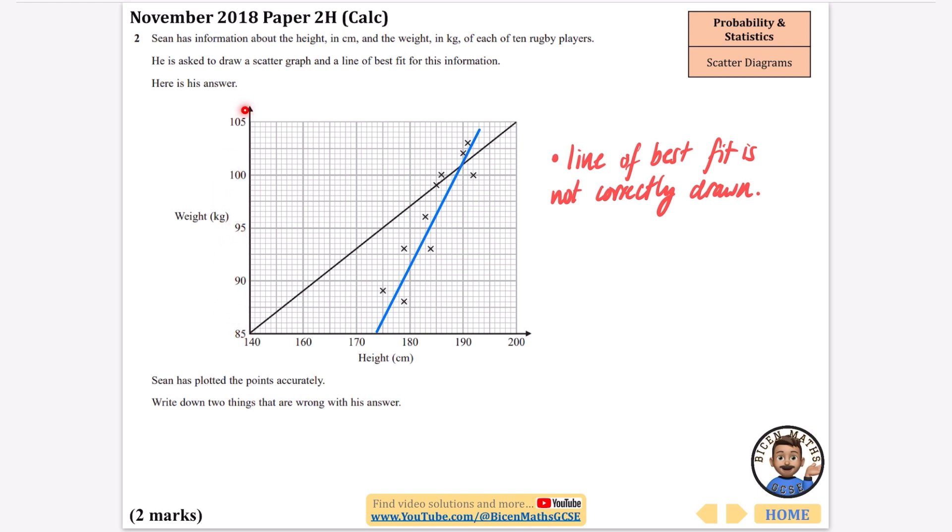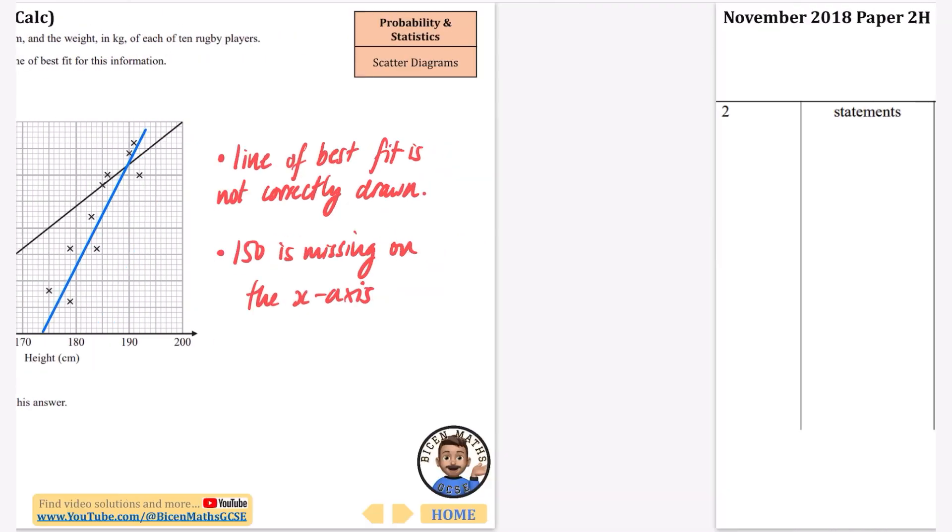I'm going to try and find the second mistake. It's 85, 90, 95, 100, 105. Fine. 140, 160, 170. Oh wait there's an issue here. It's going 160. These are going up in tens and there isn't 150 on the diagram. So I'm just going to say that 150 is missing on the x-axis.